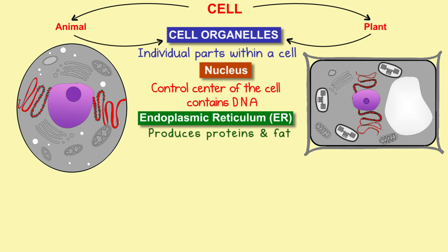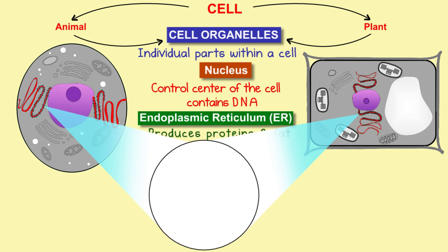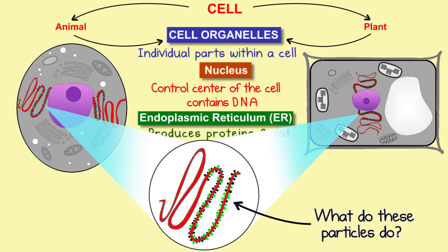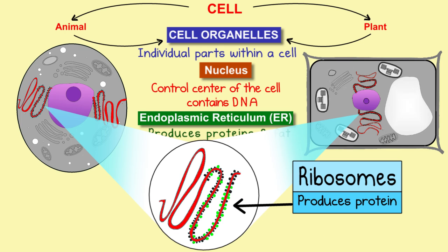If you observe this large network under a microscope, you will see that some parts of it have particles or grains attached to it. Just as we get our proteins from the food we eat, cells get their proteins because of these particles, which are called ribosomes. Because of these ribosomes, that part of the network appears rough.